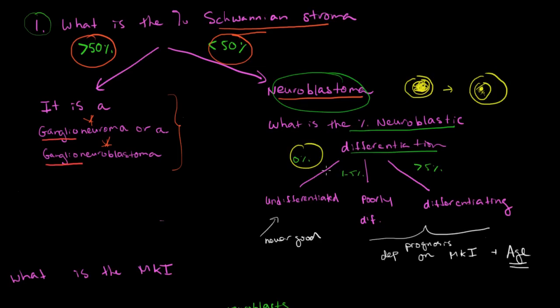If it's 0% neuroblastic differentiation, then it's an undifferentiated tumor. And these are uniformly bad. These are uniformly unfavorable histology, regardless of the patient's age. But if there's 1-5% neuroblastic differentiation, it gets called a poorly differentiated neuroblastoma. And greater than 5% is considered a differentiating neuroblastoma.